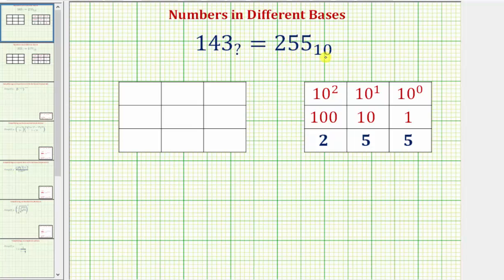For review, in base 10, the place values are determined by powers of 10. The five in the rightmost digit is in the ones place value, because 10 to the zero equals one. The five in the middle is in the tens place value, because 10 to the first equals 10. And the two is in the hundreds place value, because 10 squared equals 100.